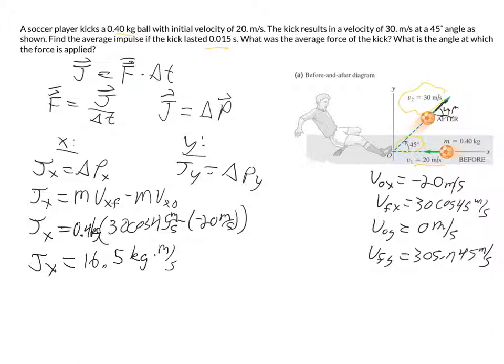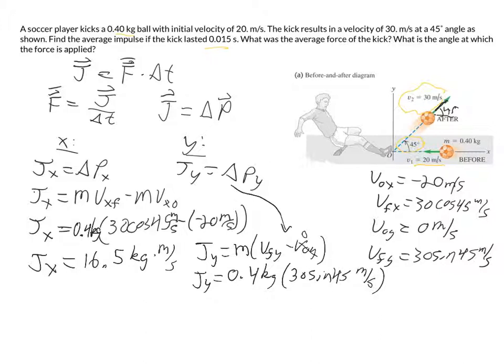So now we can do the same thing in the y direction. So impulse in the y is going to be equal to the mass, which I'm going to go ahead and factor out, times v final in the y minus v initial in the y. v initial in the y is 0. So our impulse in the y is going to be the mass, 0.4 kilograms multiplied by 30 sine 45 meters per second. And so our impulse in the y direction should come out to be equal to 8.49 kilograms times meters per second.